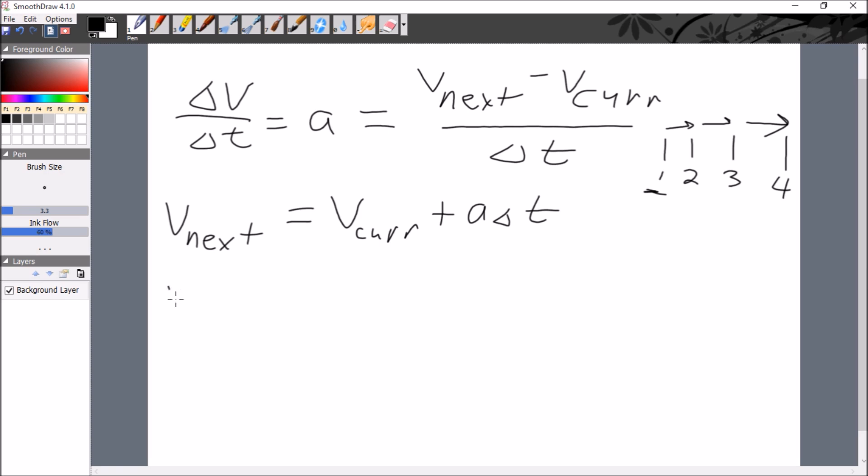The same thing works out with the position. If I want to know the next value of the position, I just take the current value of the position plus the velocity times delta t. Now there's a little ambiguity of which speed do you put in here. Do you put in the current speed, the next speed, an average of the two, or something else? It turns out this method is most stable when you use the next value of the velocity. As we like to say in physics, it keeps the universe from blowing up.